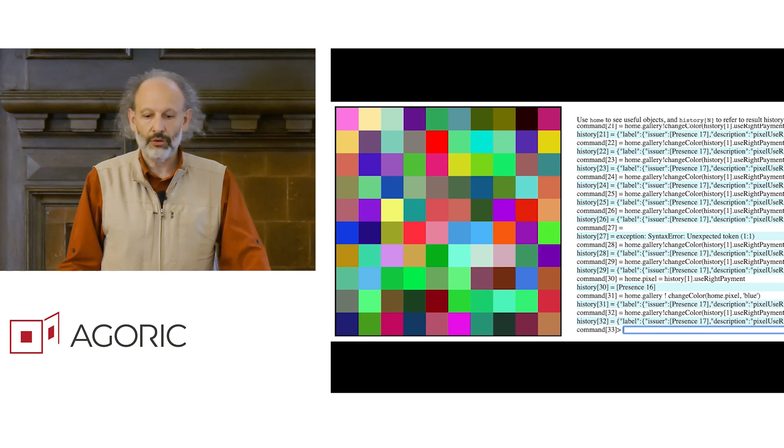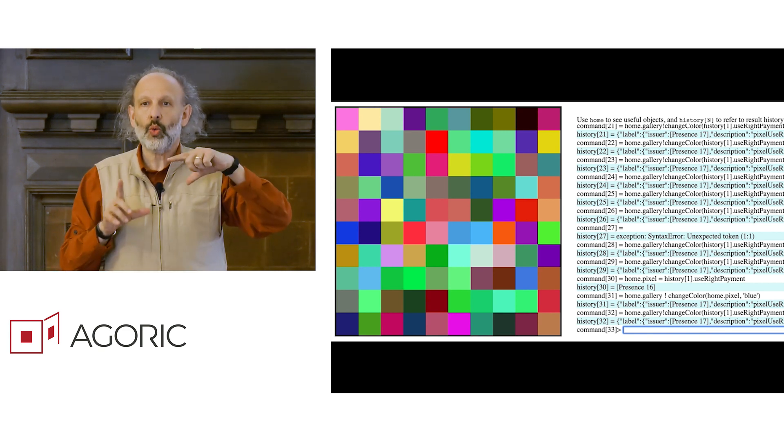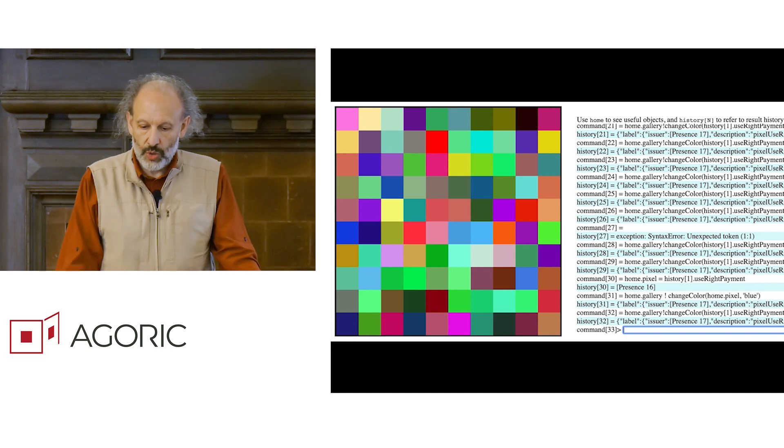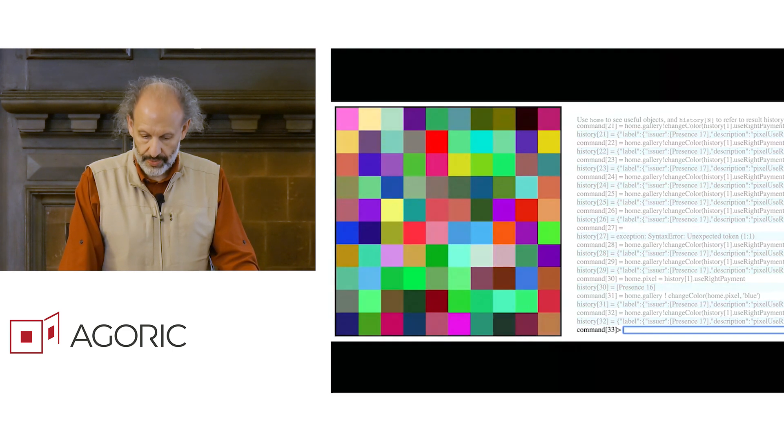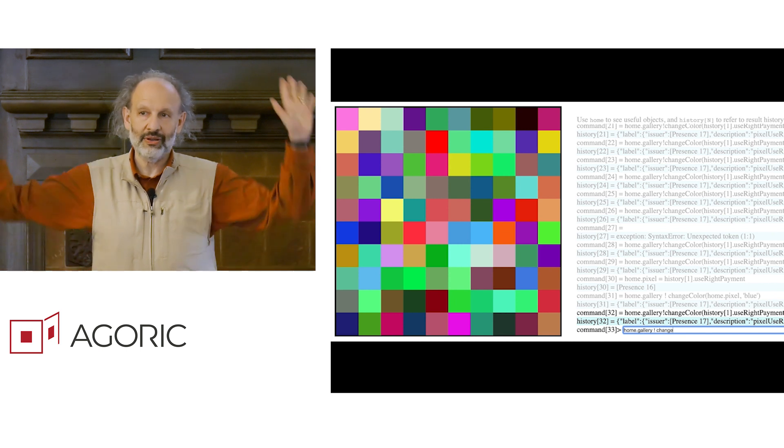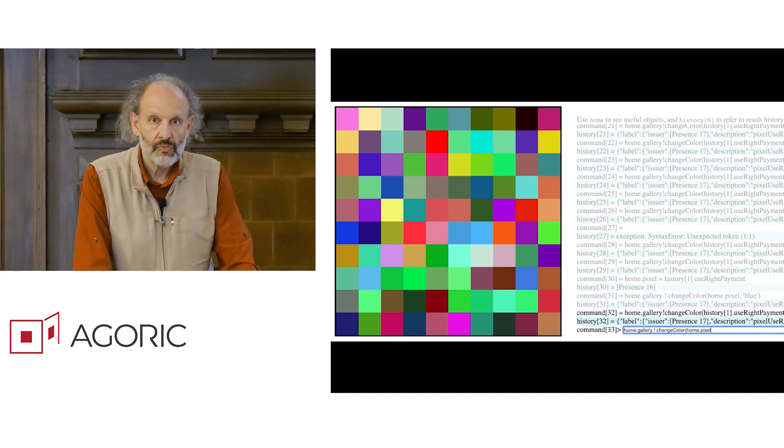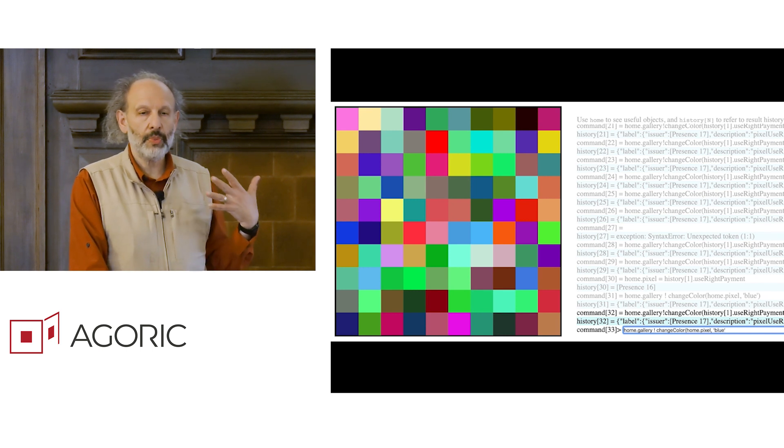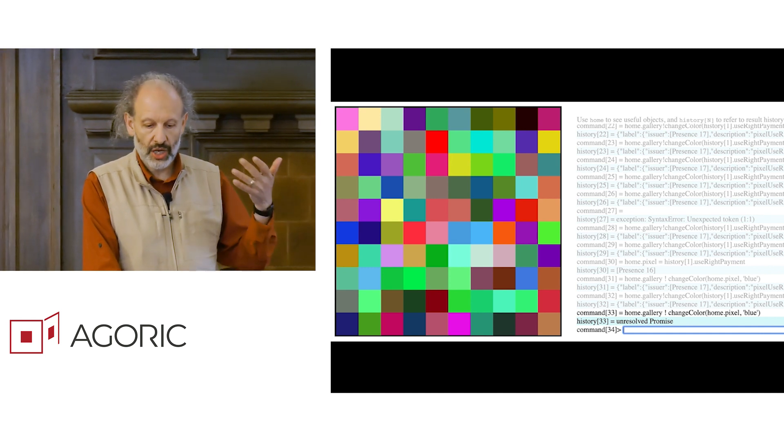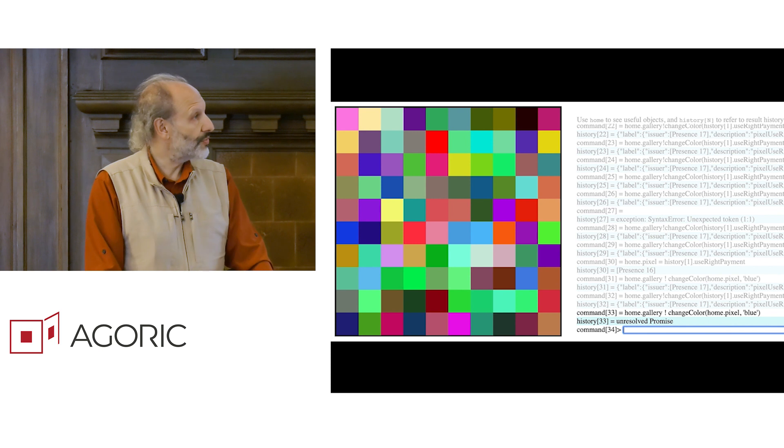What the Pixel Dust demo is about is it creates this little real estate market that is running on the chain, which is this square of pixels, where each pixel can be individually owned and traded. And if you own a pixel, you have the right to change its color. So over here, I'm supposedly typing a command in JavaScript where this JavaScript command goes to our software running on a local machine and then the objects on that local machine send a message to objects running on our chain that actually brings about the change of color of the pixel.